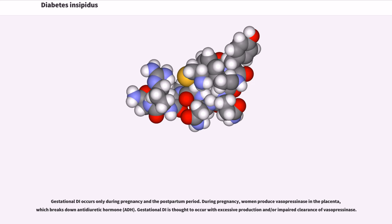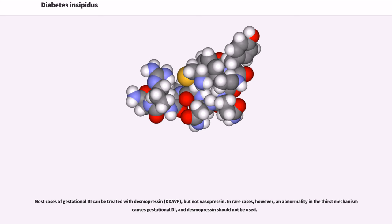Gestational DI occurs only during pregnancy and the postpartum period. During pregnancy, women produce vasopressinase in the placenta, which breaks down antidiuretic hormone. Gestational DI is thought to occur with excessive production and/or impaired clearance of vasopressinase. Most cases of gestational DI can be treated with desmopressin, but not vasopressin. In rare cases, however, an abnormality in the thirst mechanism causes gestational DI, and desmopressin should not be used.